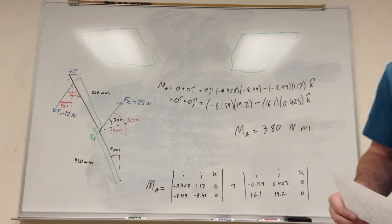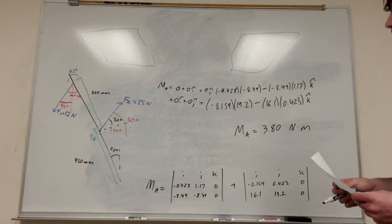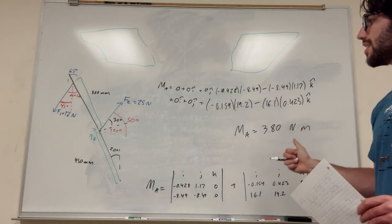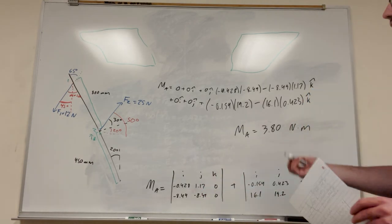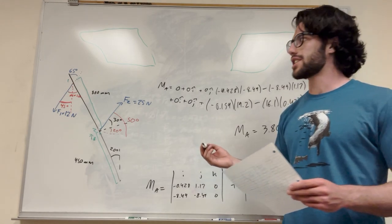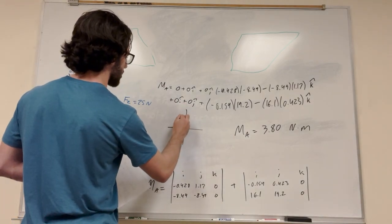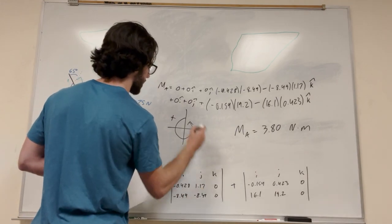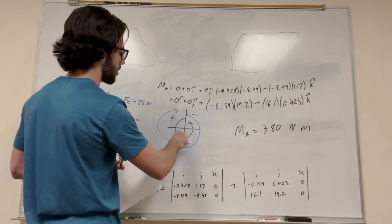Not too hard to figure that part out. We're in newton meters. So that's the answer — 3.80 newton meters. That's for part B. But for part A, it asks what direction it's turning. If the value is positive, that means it goes counterclockwise. If it's negative, it goes clockwise. Since it's a positive number, it's going counterclockwise.